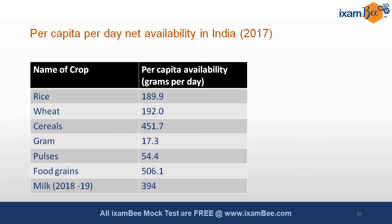Per capita per day availability of major commodities in India: for rice it is approximately 190 grams, for wheat it is 192 grams, total cereals is 451 grams, gram is 17.3 grams, pulses are 54.4 grams, total food grains is 506 grams, and milk is 394 grams per person per day.